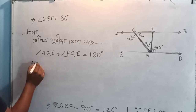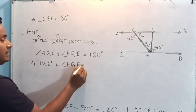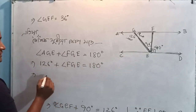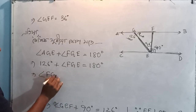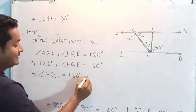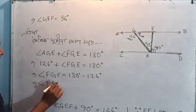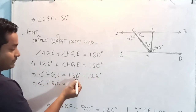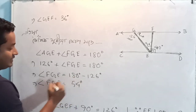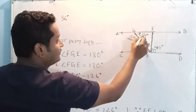If I already have 126 degrees, FGE is equal to 180 degrees. If I say 126 degrees, FGE is equal to 180 degrees. So 180 minus 126 is equal to 54 degrees. I will say 54 degrees.